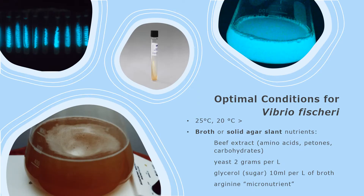Vibrio fischeri's optimal nutrients were tested for the best light emission in both broths and solid agar slants. The conclusive data shows that Vibrio fischeri thrives on a mixture of yeast, beef extract, glycerol, monosodium phosphate, and peptones. Beef amino acids provide nitrogen, and the yeast and glycerol act as carbon sources. You can also see that Vibrio fischeri is an obligate aerobe based on its growth only on the surface of the agar slants where oxygen is available. The broth must be constantly aerated to supply enough oxygen.